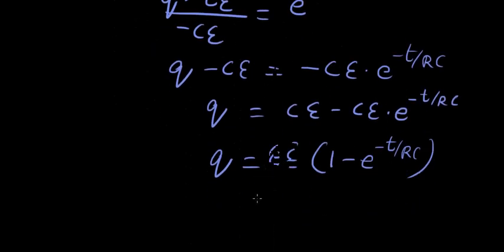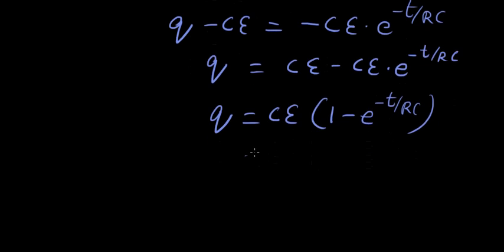Now this ce is what? q final. q final times 1 minus e power minus t over rc.